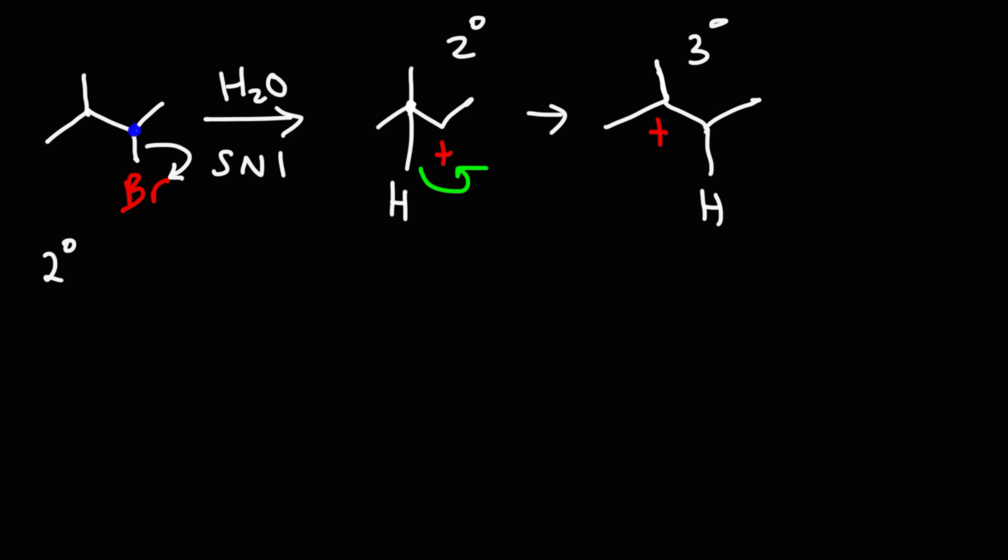So now that we have this tertiary carbocation, once we form this carbocation, it's going to react with the solvent. When the solvent behaves as a nucleophile, what you have is a solvolysis reaction. The nucleophile is going to combine with the carbocation, giving us an oxonium ion.